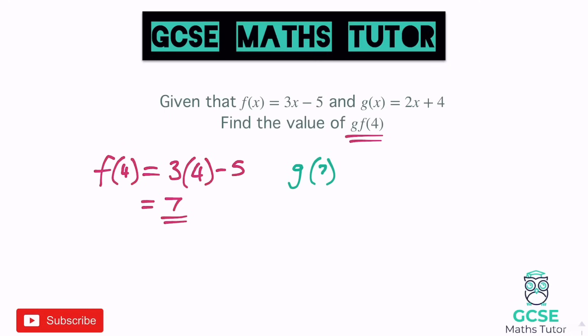Now we've got the answer 7, so we need to work out g. We're going to put 7 into g. That gives us 2 lots of 7 — g is 2x plus 4. So 2 lots of 7, add 4, would give us 14 plus 4, which is 18. So just think about the language: what is g when f is 4? Sub 4 into f, get 3 times 4 which is 12, take away 5 which is 7. Then put that into g: 2 lots of 7 add 4, so 14 add 4 gives us 18.